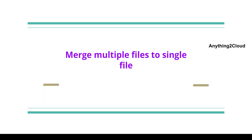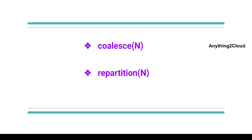Today we will see how we can merge multiple files into a single file. We have two functions — coalesce and repartition. With the help of these two functions we can combine multiple files into a single file. Let's see the characteristics of each of these functions.